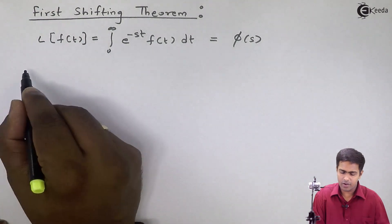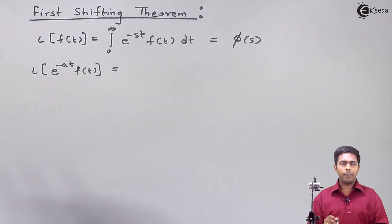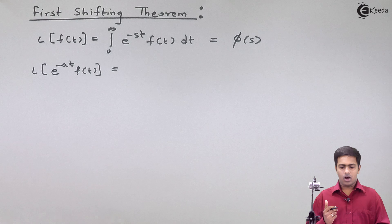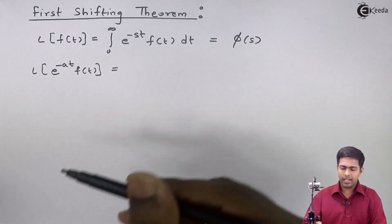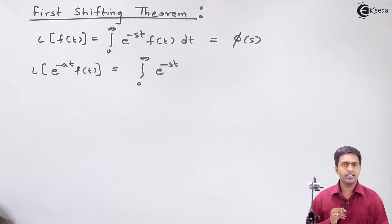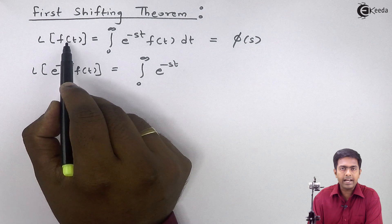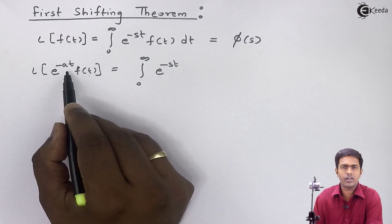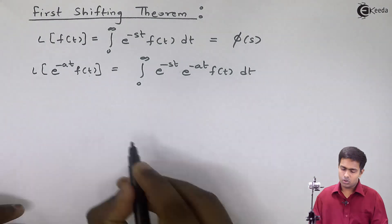By using the first shifting property, we can evaluate the Laplace transform of e raised to minus at times f(t). To find this value, we apply the definition: the integral from 0 to infinity of e raised to minus st — and here, since we have e raised to minus at times f(t) instead of just f(t), we write this full function in the integration — giving us e raised to minus at times f(t) dt.